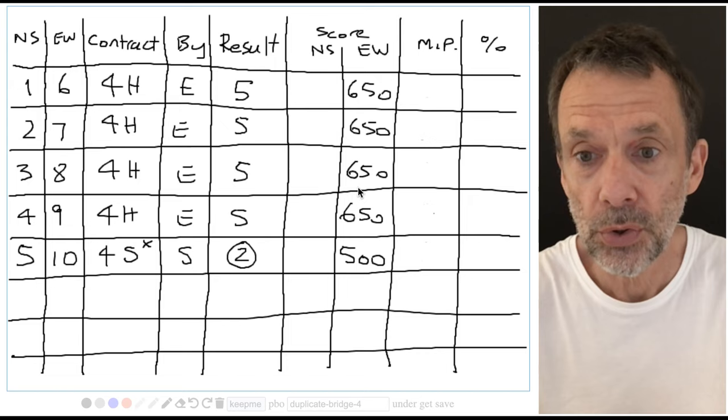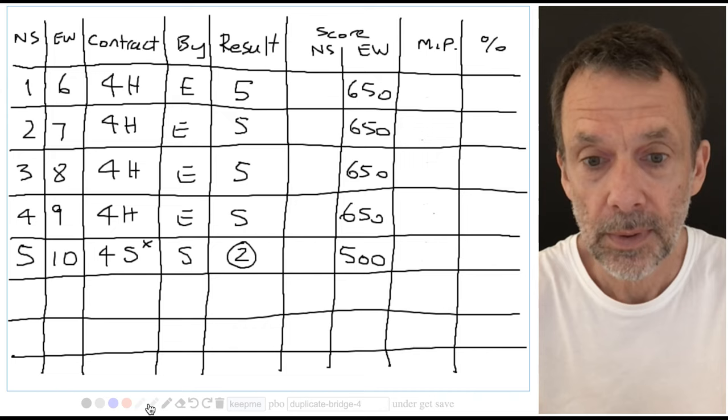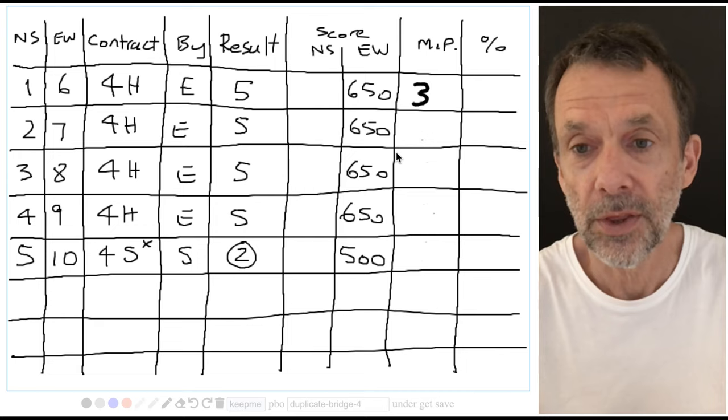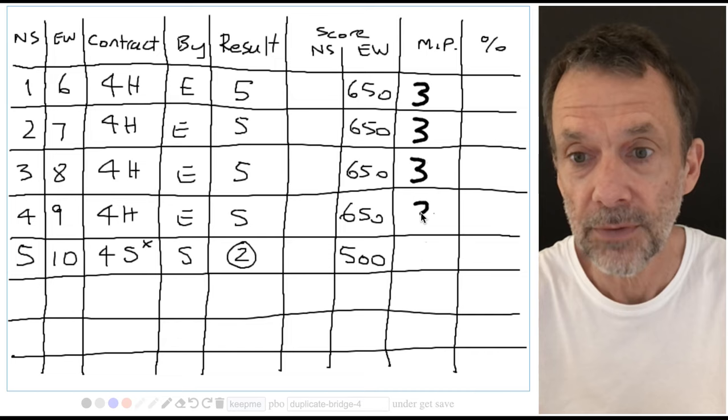But they tied with pair two, three and four. So three match points for tying with the other three minus 650s. And pair two and pair three and pair four are the same.